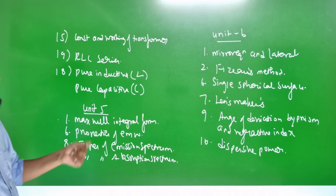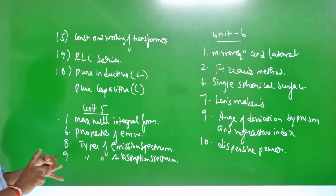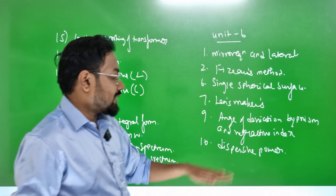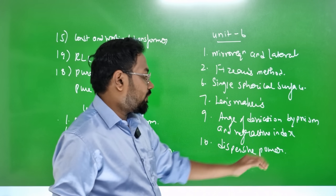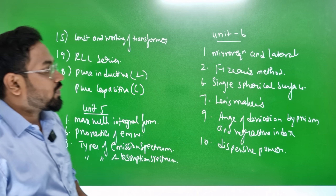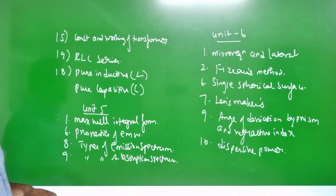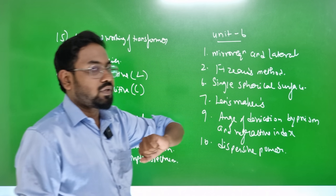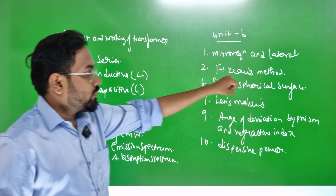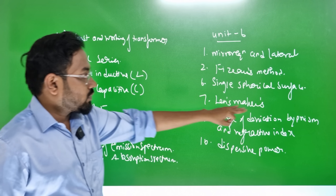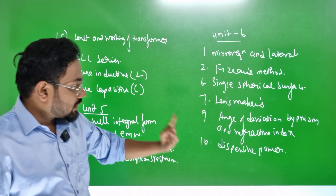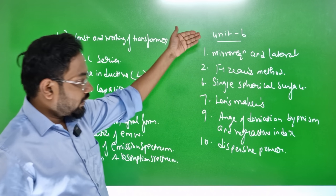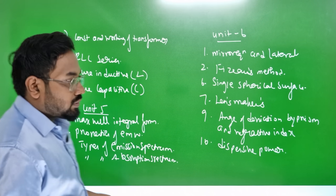Unit 6: mirror equation, FISU method, lens makers equation, single spherical surface, angle of deviation by prism, and refractive dispersive power. If you can learn mirror equation, lateral magnification, and the FISU method, you are all set.